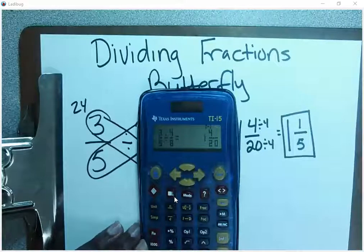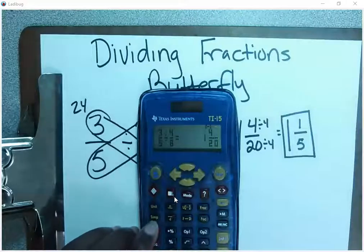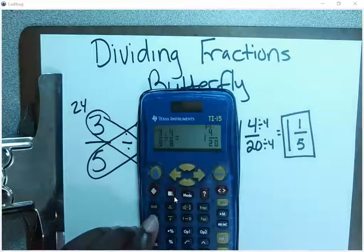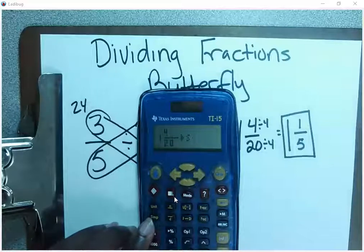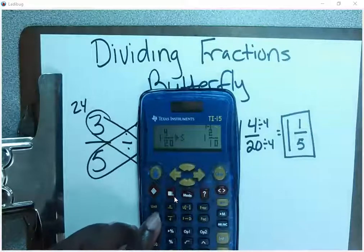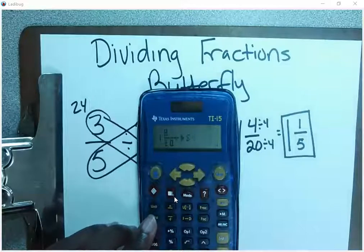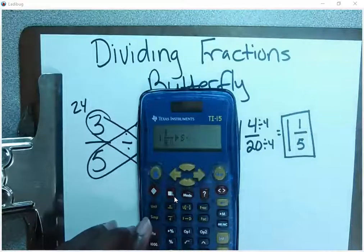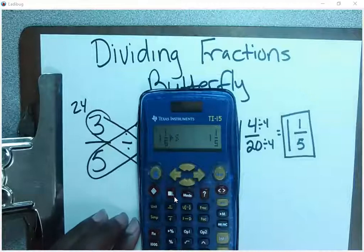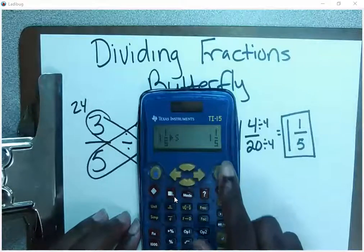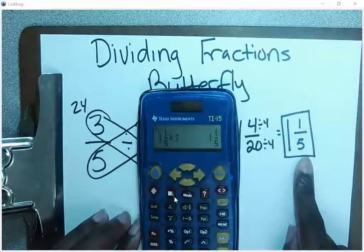To simplify that, you simply hit this SIMP button. Then you hit enter again. And you keep simplifying until you get the same answer twice. So once again, I got here what I have as my answer choice, which is one and one-fifth.